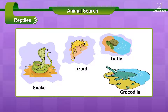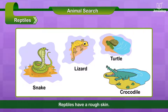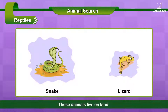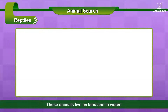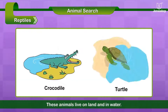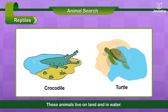Some animals are called reptiles. They have a rough skin. Most of them live on land. Some of them, like the crocodile and the turtle, live on land and in water.